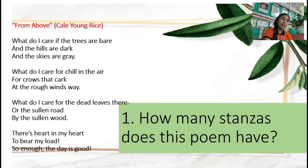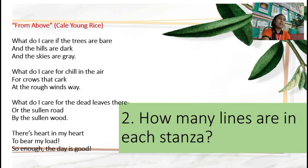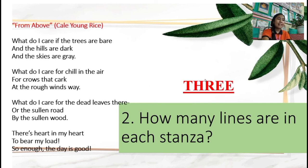For question number one, how many stanzas does this poem have? Let's count: one, two, three, four. The answer should be four. For number two, how many lines are in each stanza? One, two, three — one, two, three. So the answer should be three.